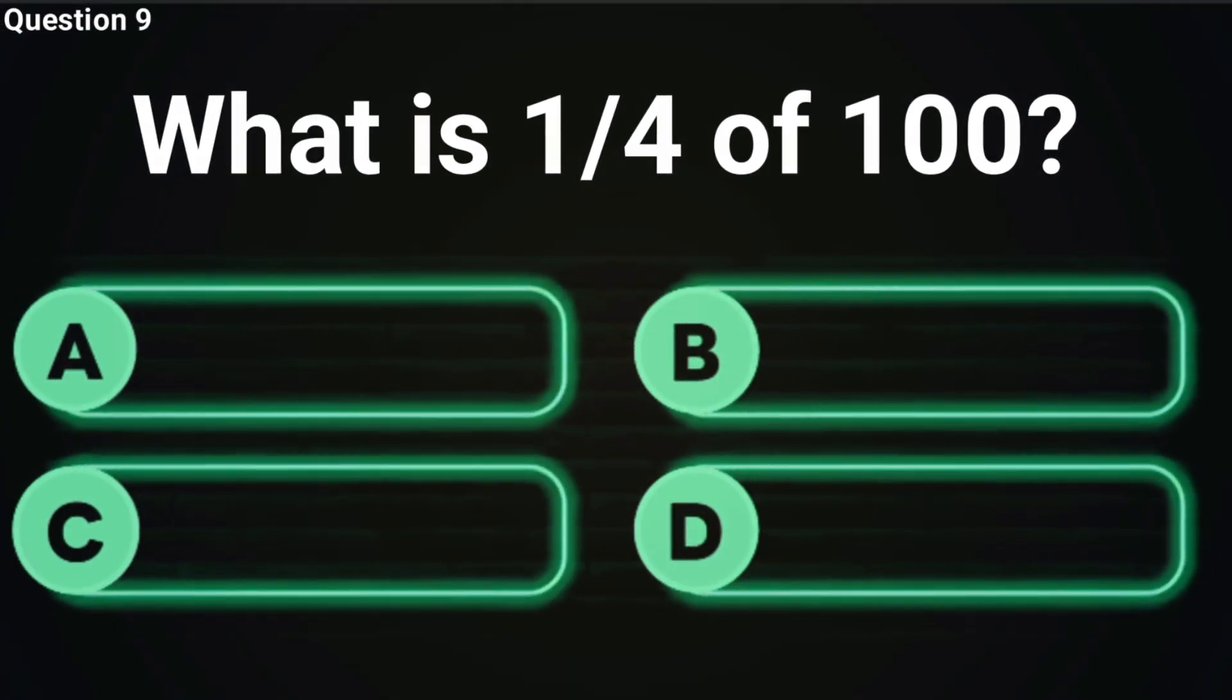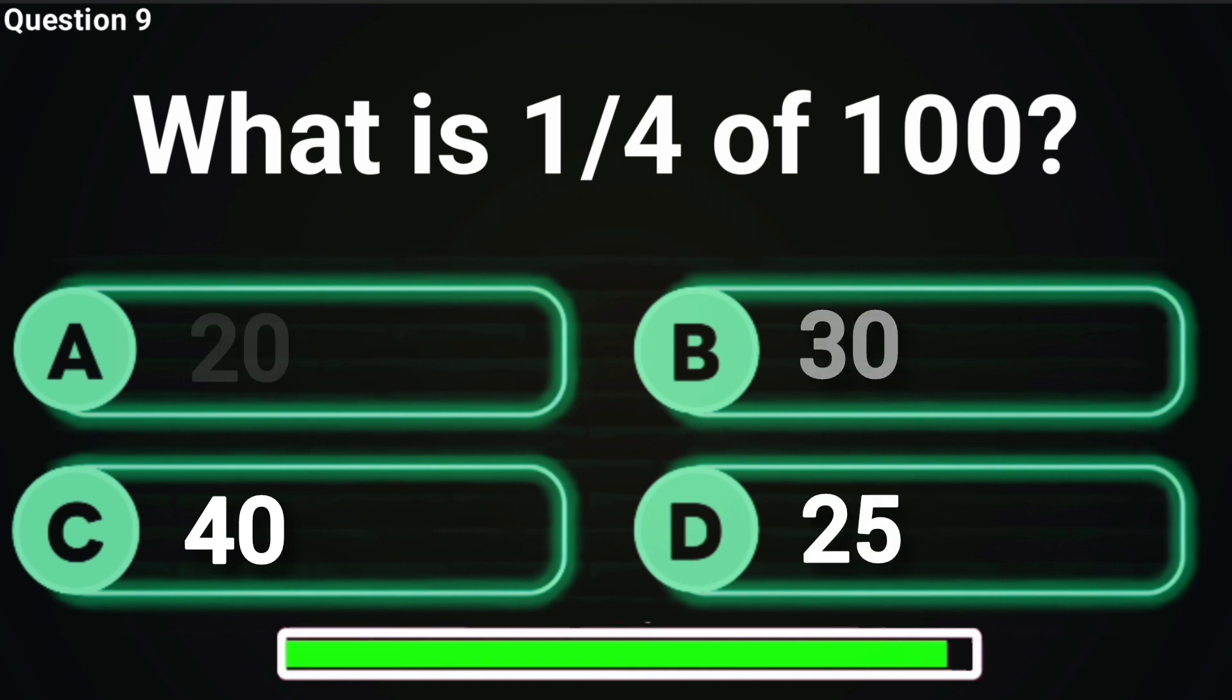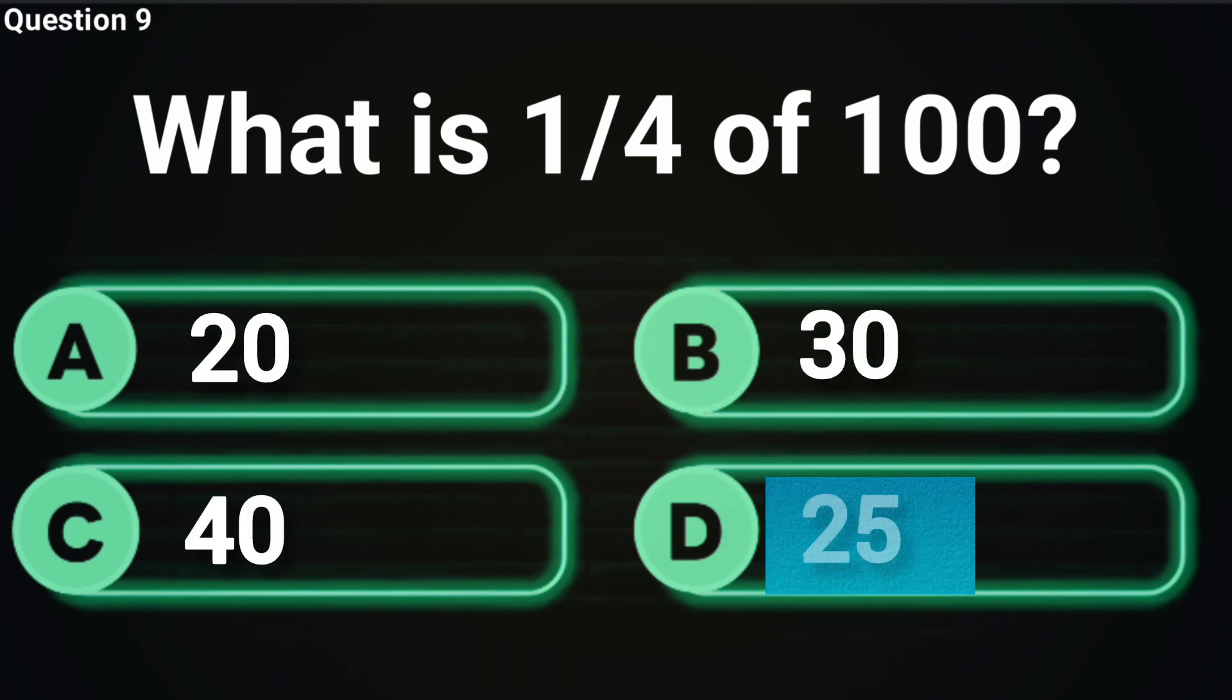What is 1 quarter of 100? A piece of 100 like dividing the last chocolate bar. Answer D, 25 is correct.